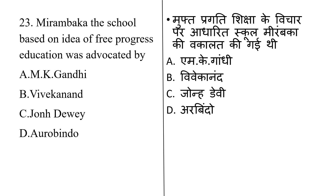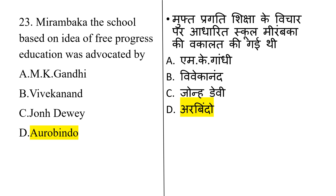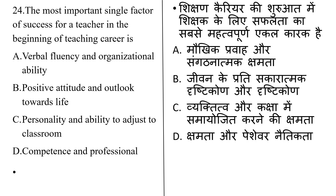Mirambika — the school based on the idea of free progress education — was advocated by: M.K. Gandhi, Vivekananda, John Dewey, or Aurobindo. The correct answer is Aurobindo: the Mirambika school based on the idea of free progress education was advocated by Aurobindo.